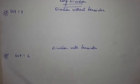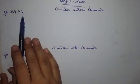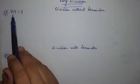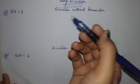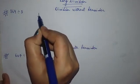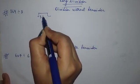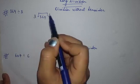So first I have written 369 divided by 3. So this is a three digit number. Let's divide 369 by 3.